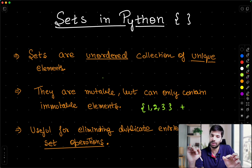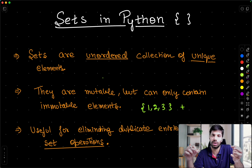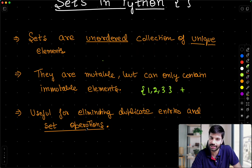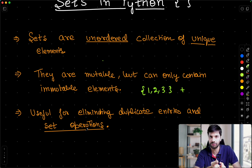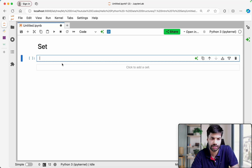So sets are useful for eliminating duplicate entities and for set operations. Let me show you quickly how to create a set. We can make a set using curly braces, like S1 = {1, 2, 3, 4}, and if you check type(S1), it is 'set'.